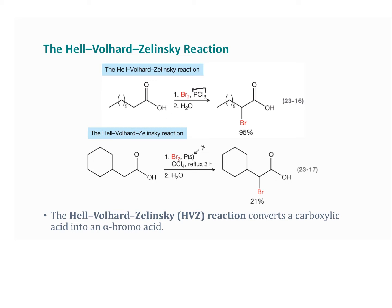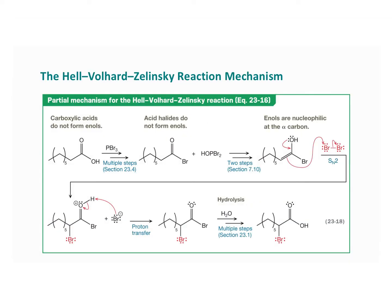In both cases, regardless of what you're using, PBr3 is produced, and that's responsible for converting the carboxylic acid to an acid halide. Let's look at this mechanism.